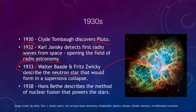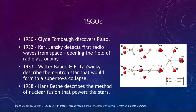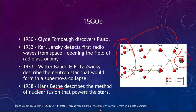Towards the end of the 1930s, we learned how stars produce their energy. Hans Bethe gave us the method of nuclear fusion, where essentially four hydrogen atoms go through a process and become a helium atom — the nuclear fusion that powers the stars. Prior to 1938, we were still working on trying to understand how stars could be powered.